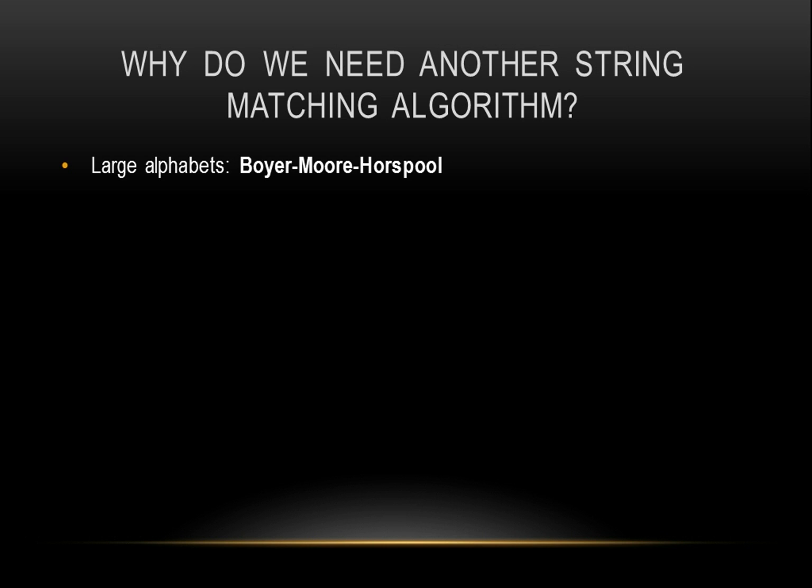But if you want to search for a pattern that is derived from a large input alphabet such as natural languages, the BMH algorithm could provide a good solution. If the alphabet is small and repetitions are likely to occur in the text, the KMP algorithm is ideal.